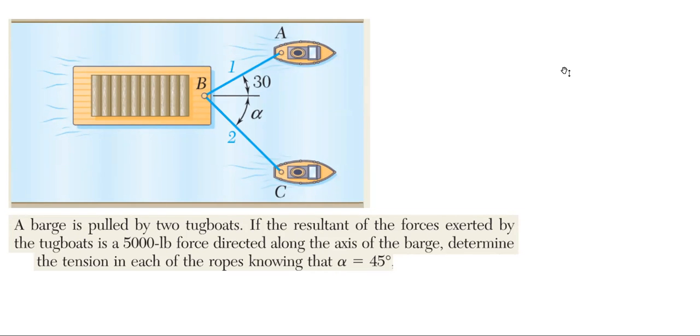Hello everybody, today we'll be solving this problem. In this problem we have a barge being pulled by two tugboats. If the resultant of the forces exerted by the tugboats is 5,000 pounds directed along the axis of the barge, meaning the horizontal axis here, determine the tension in each of the ropes.